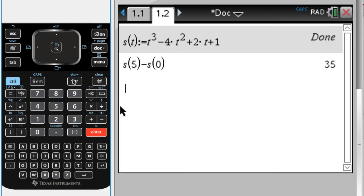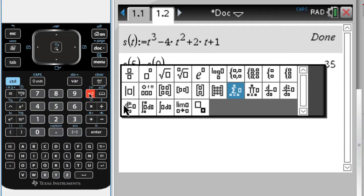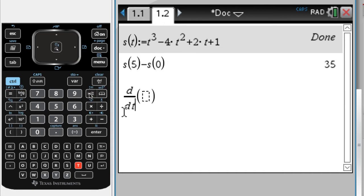Now we need to tackle distance traveled. For distance traveled, we need to know the starting point and ending point, but also we need to know everywhere this thing turned around in the interval. So I'm going to take a look at a graph of velocity. I need to find velocity, so let's find the derivative. Template, this right here is the derivative template. So the derivative with respect to t, fill in t, s of t, I'm going to press enter.